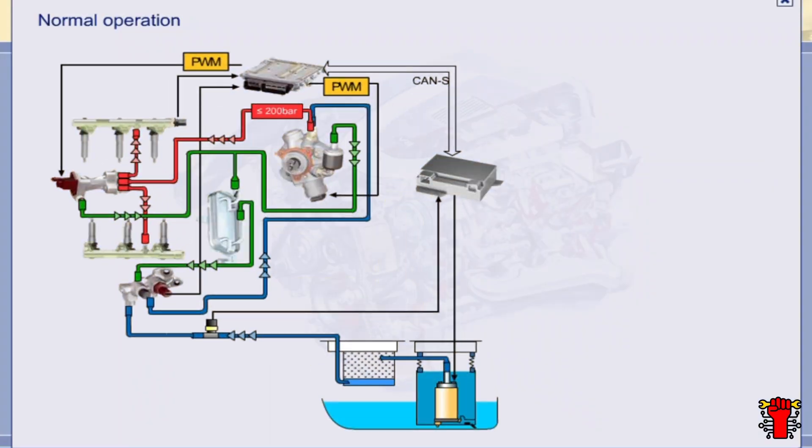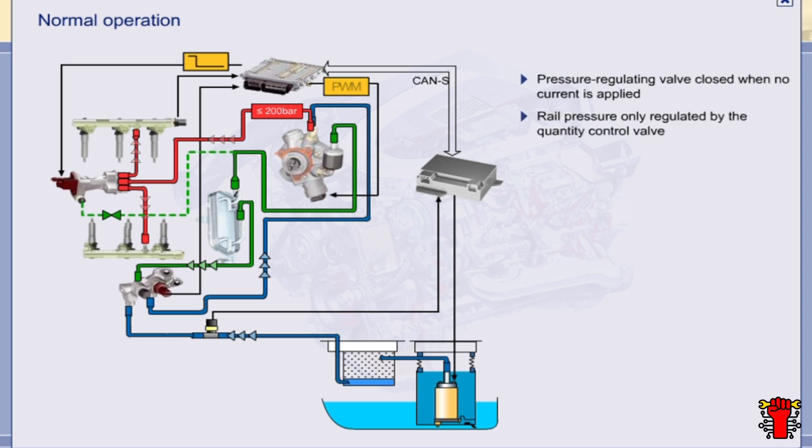Normal operation refers to fault-free driving mode and applies to all load ranges. In normal operating mode, the pressure regulating valve is de-energized and therefore closed. In normal operating mode, rail pressure is regulated exclusively by means of the quantity control valve.